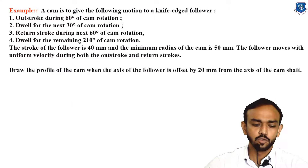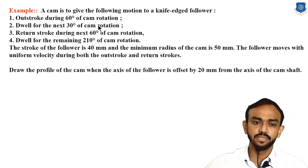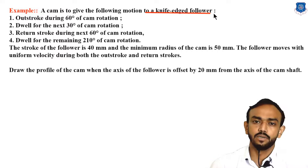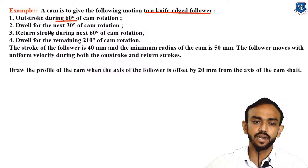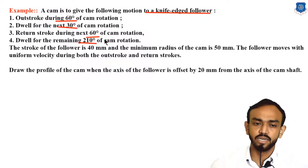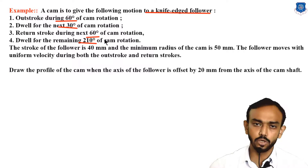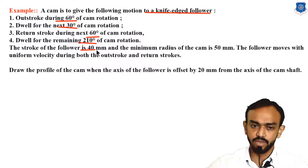As you can see the given data here: the cam is to give the following motion. A knife-edge follower is used. In the last example we completed a cam profile with knife-edge follower but there was no offset. In this example there is an offset. The out stroke or rise is 60 degrees, after that dwell for 30 degrees, then return for 60 degrees, and remaining dwell for 210 degrees. This total will always be 360 degrees because all data is given for one complete revolution of the cam. The stroke of the follower is 40 mm.